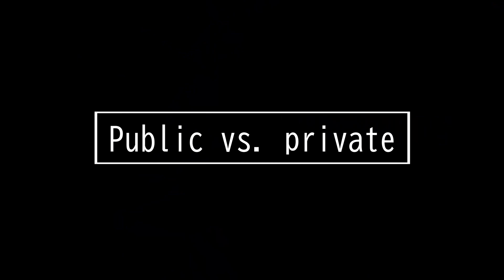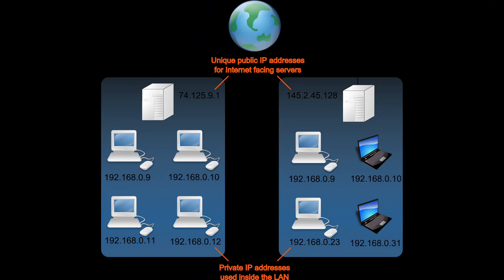This video is on public versus private networks. A public network is a network to which anyone can connect, and the best example of this is the internet. A private network is any network to which access is restricted — a corporate network is an example.